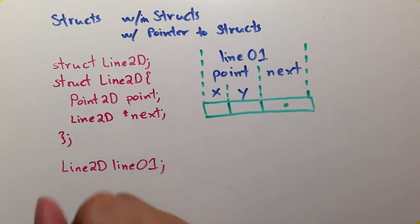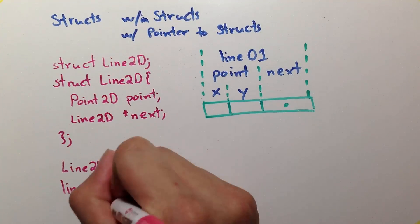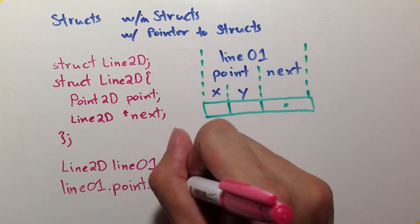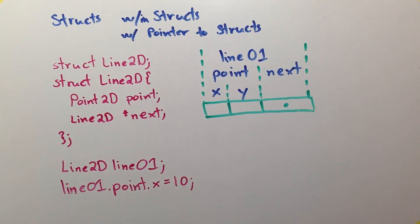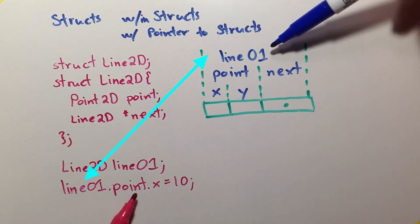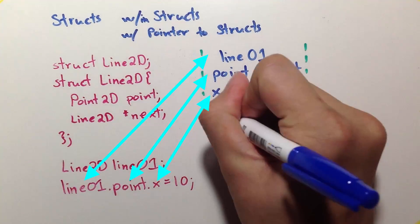Question. Given the statement line01.point.x gets the value of 10, which variable are we changing? We can easily follow this from the diagram. We start with line01, get its child, point, and get its child, x, then assign it 10.